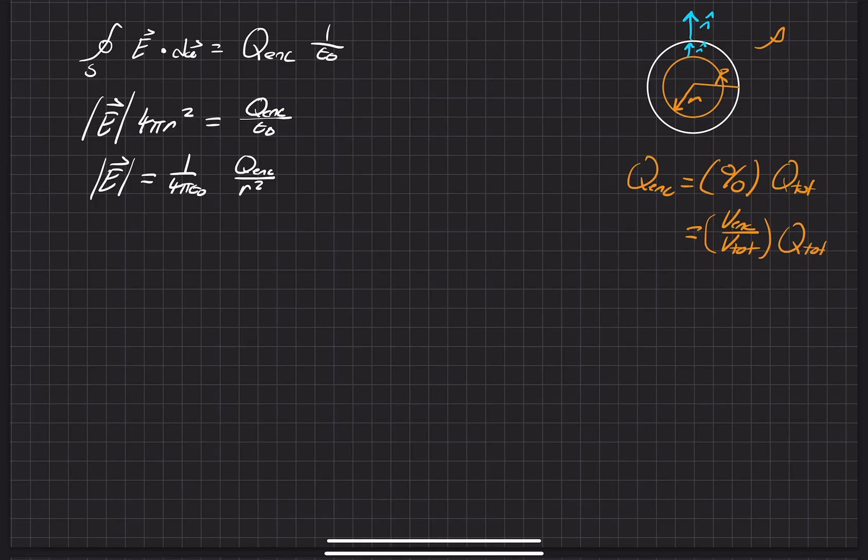The volume of a sphere, they both have four-thirds pi in common, and the thing that they don't have in common is the R cubed. So the four-thirds pi will both cancel out, and all that's going to be left is the ratio of the cubed radii of the two. And that is going to be equal to our Q enclosed.